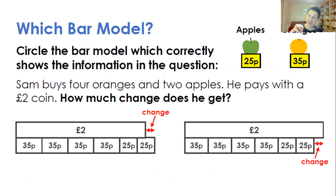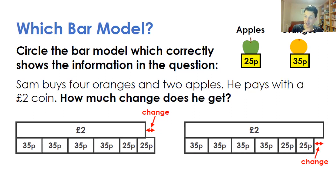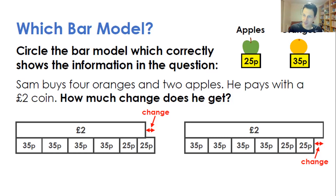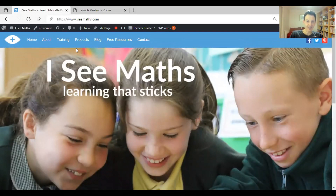Another technique that will run throughout this resource, certainly in its initial phase, is visual representations like a bar model. This example is taken from I See Reasoning Year Five. Children will have questions and be asked, for example, which bar model represents the structure of this question, helping children make those connections. I'm really excited about the different techniques that could be used, and of course other suggestions you would have and adaptations you would make — all the different ways this initial idea could potentially be improved.